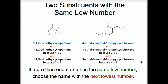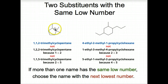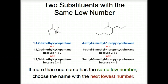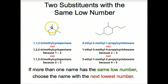Two substituents with the same low number: if more than one name has the same low number, choose the name with the next lowest number. Here's an example — 1,1,2-trimethylcyclopentane. Here's cyclopentane, a five-carbon ring. We notice we've got three methyl groups — one here and two off of this carbon. We name it to get the most number of low numbers as possible, so we call that carbon number one because it has two substituents: 1,1. This must be two to get the next lowest number — so 1,1,2-trimethylcyclopentane.